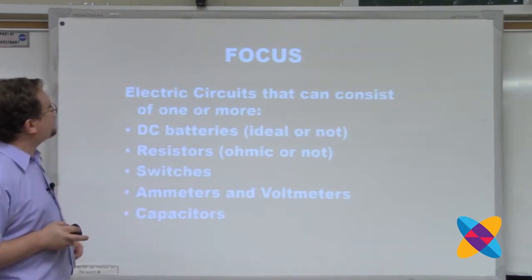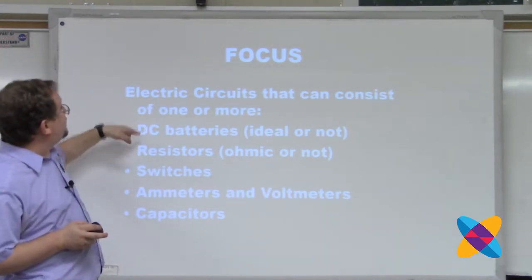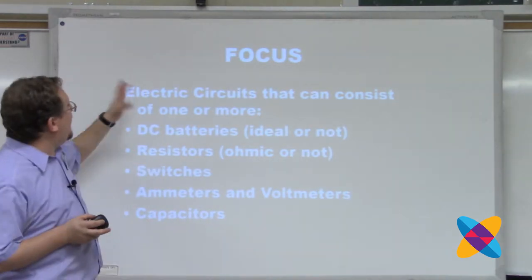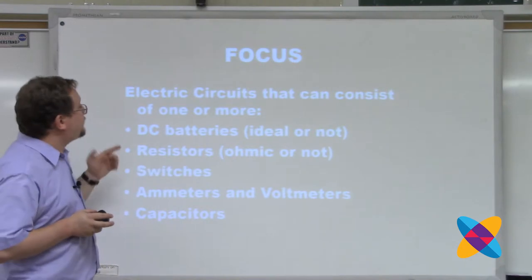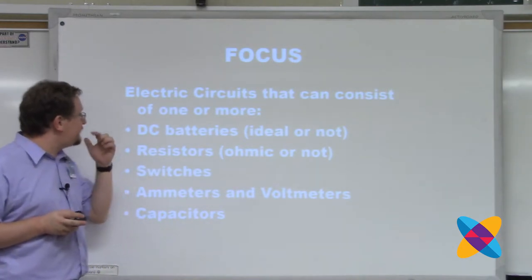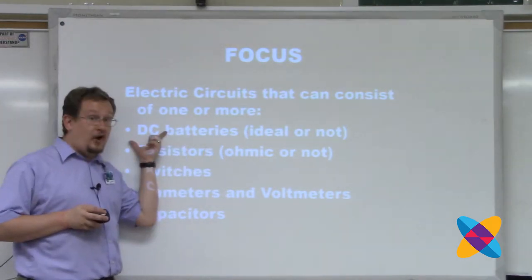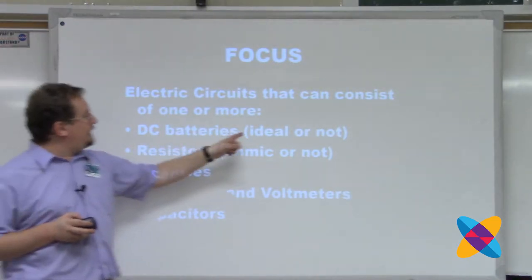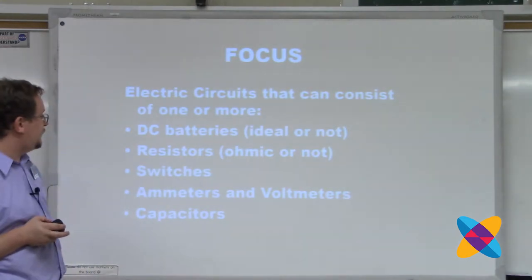The focus of this unit is electric circuits. In AP Physics II, these are circuits that can consist of one or more batteries — no alternating current, only DC direct current. The batteries may be ideal or may not be ideal; this is AP Physics II.